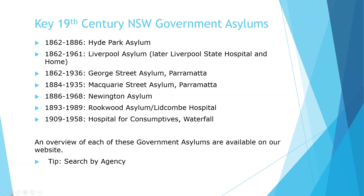There were a number of asylums for the Infirm and Destitute run by the New South Wales Government during the 19th century. These include Hyde Park Asylum, Liverpool Asylum for the Infirm and Destitute (later renamed Liverpool State Hospital and Home), George Street Asylum at Parramatta (later the State Hospital and Home for Aged and Infirm Men), Macquarie Street Asylum at Parramatta, Newington State Hospital, Rookwood Asylum, and the Hospital for Consumptives at Waterfall, also known as the Waterfall Sanatorium.